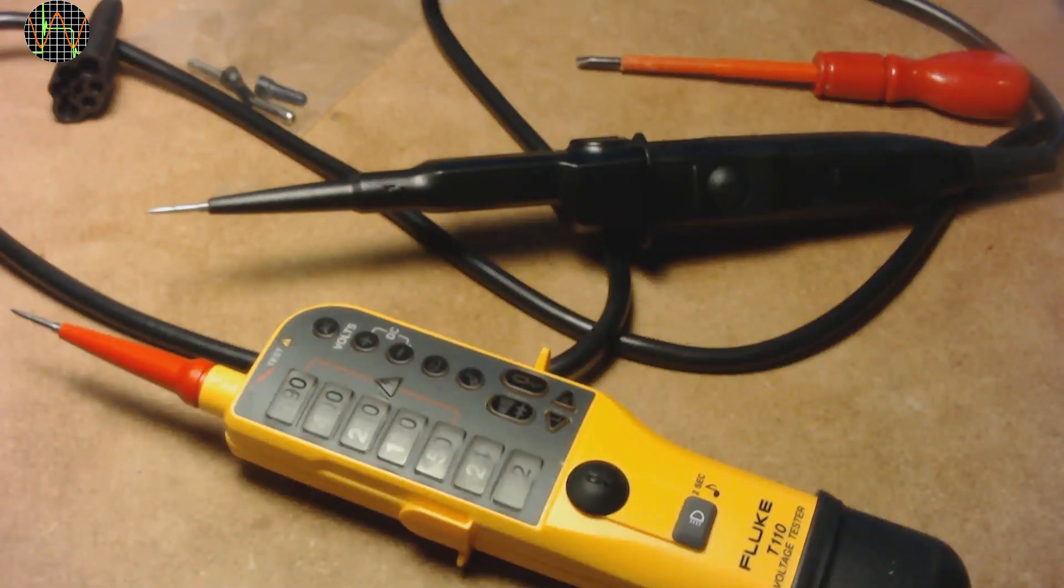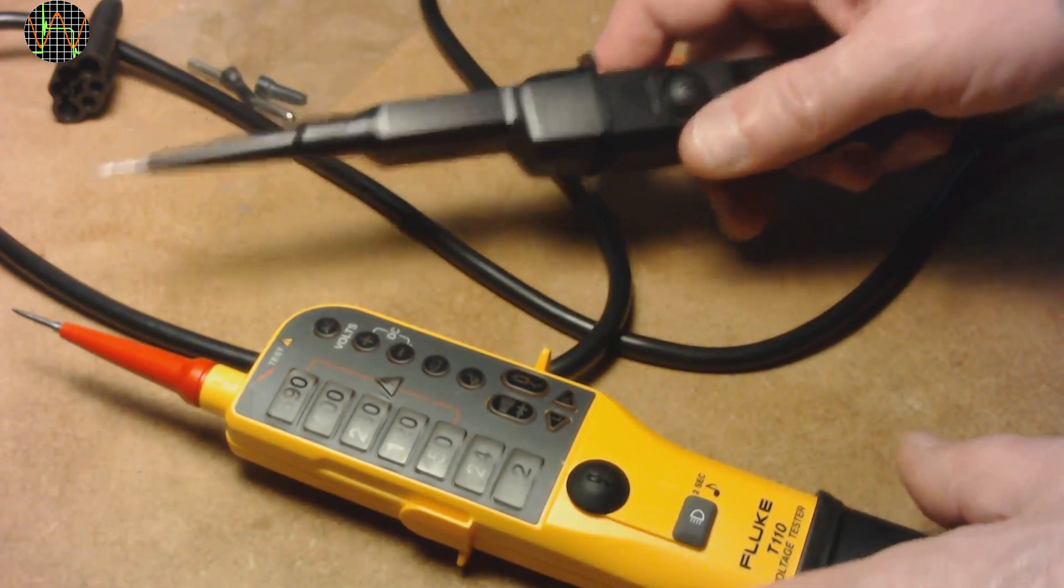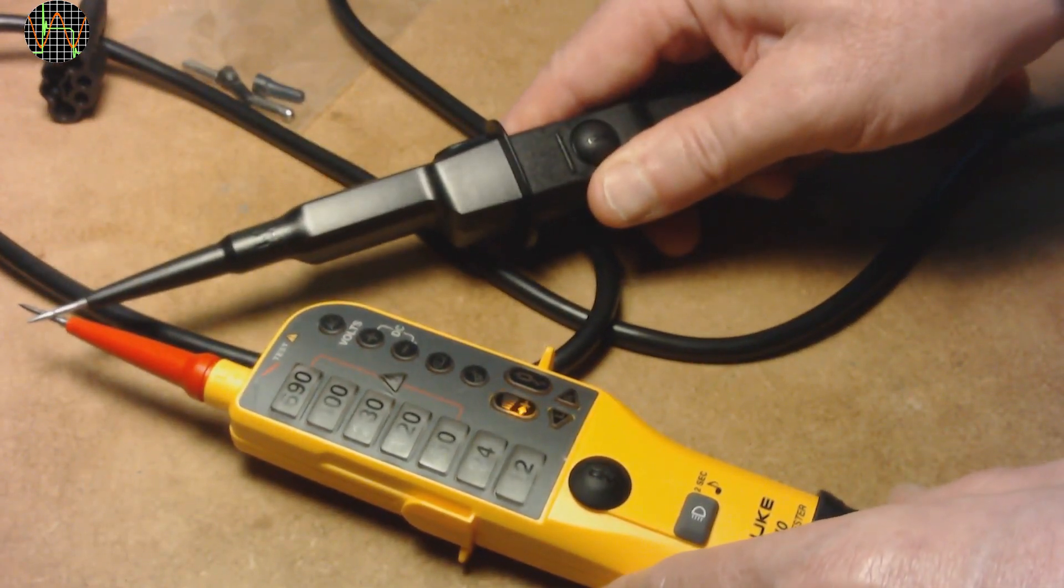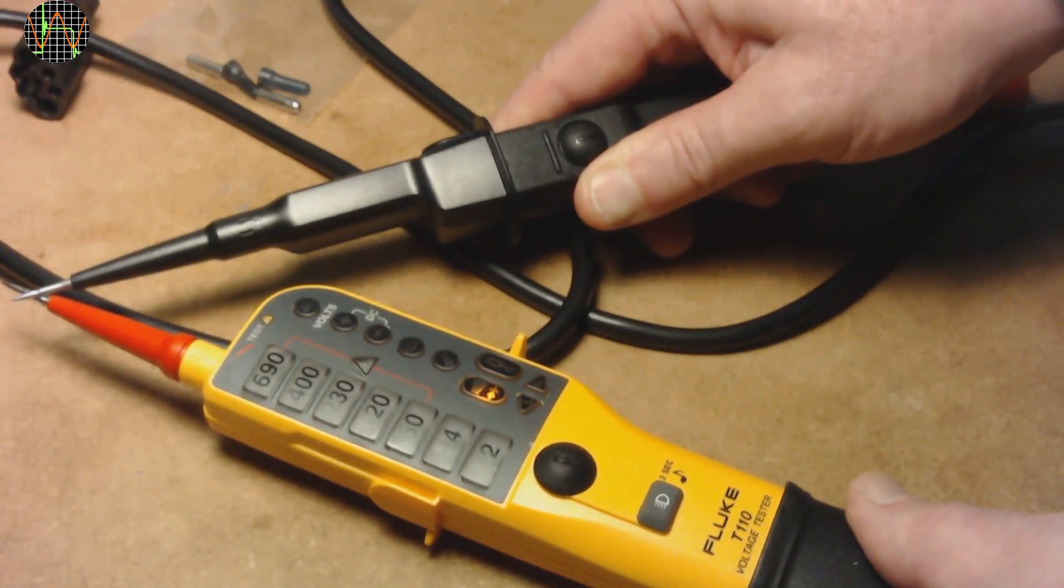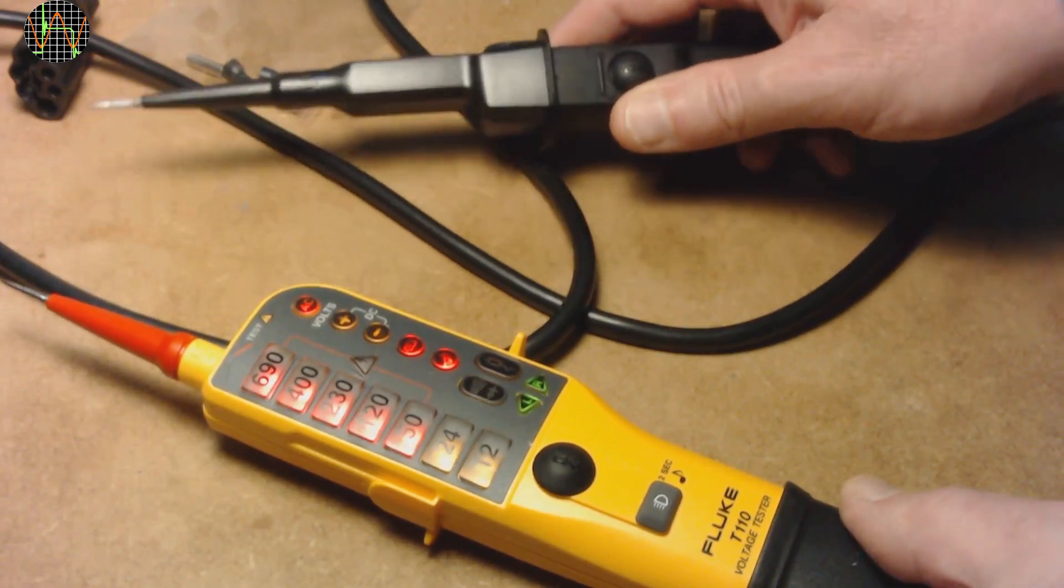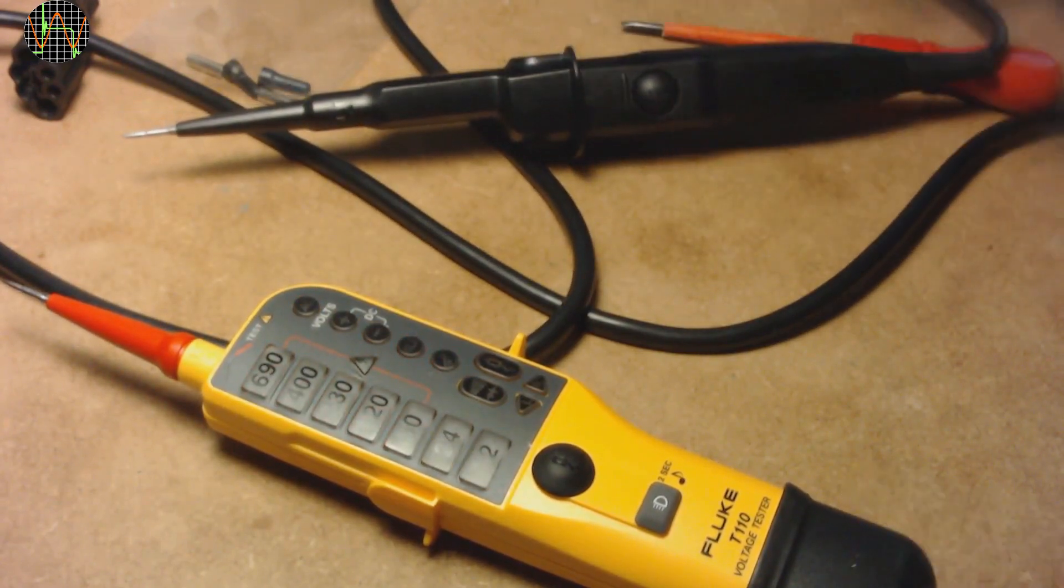The manual states that one is supposed to carry out a self-test before using the unit, and that the unit is not supposed to be used if the self-test fails. To do a self-test, you need to hold the probes together like for a continuity test, but for more than 3 seconds. Then all lights except two should come on briefly.